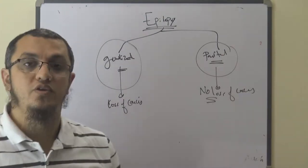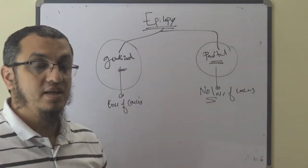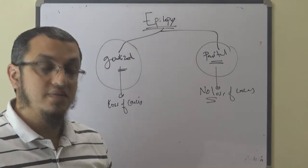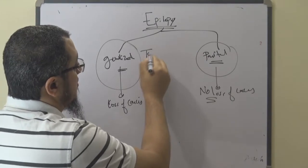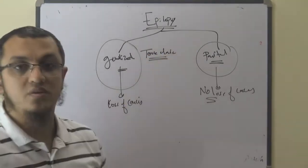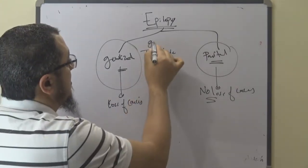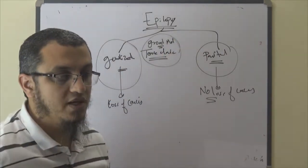What type of generalized? There are many types of generalized seizures. The most common is tonic clonic. Tonic clonic, called grand mal. Grand mal equals tonic clonic.